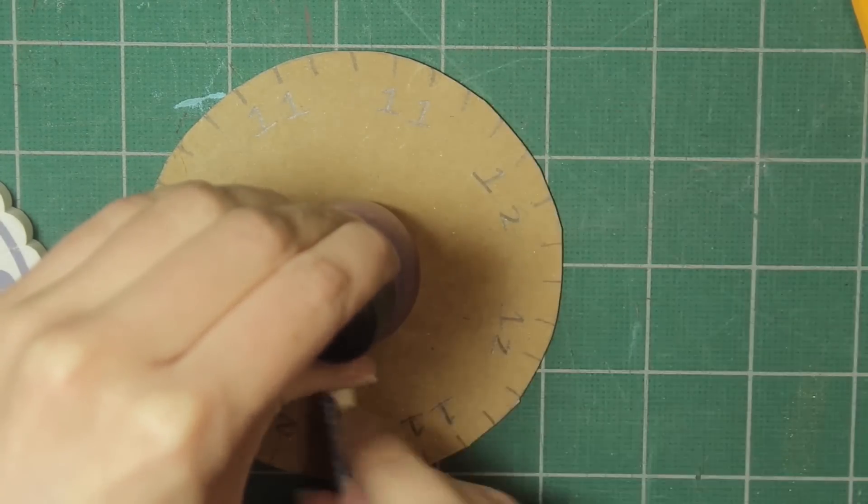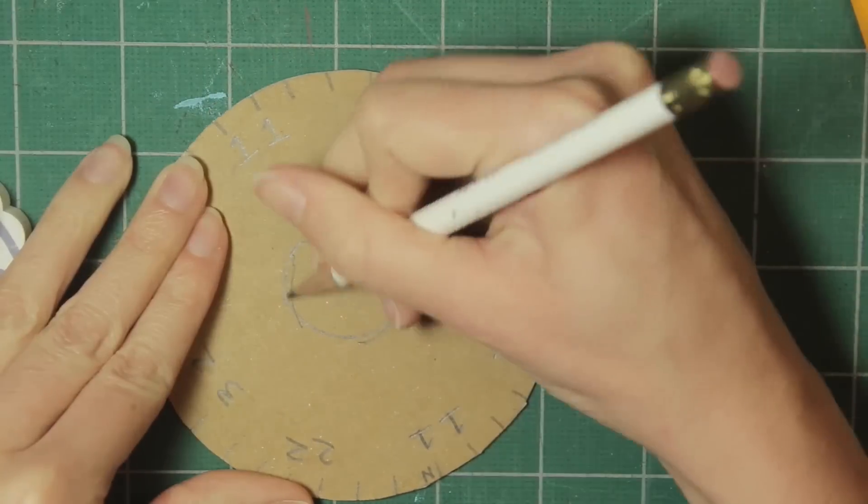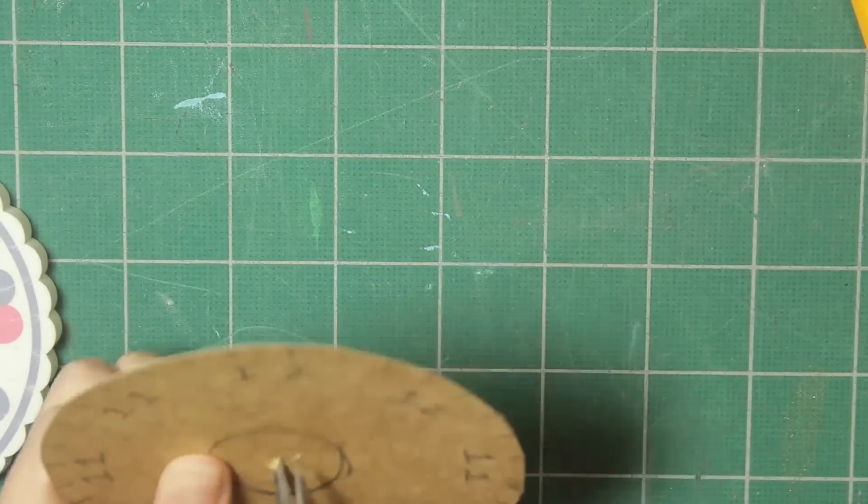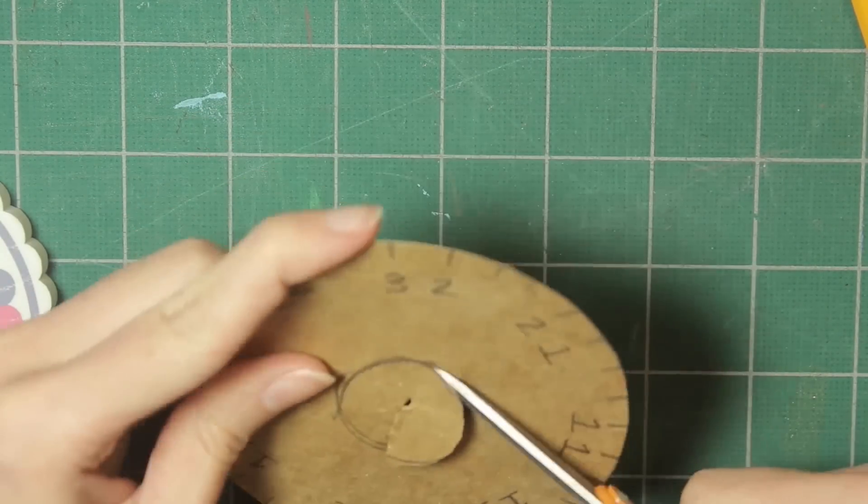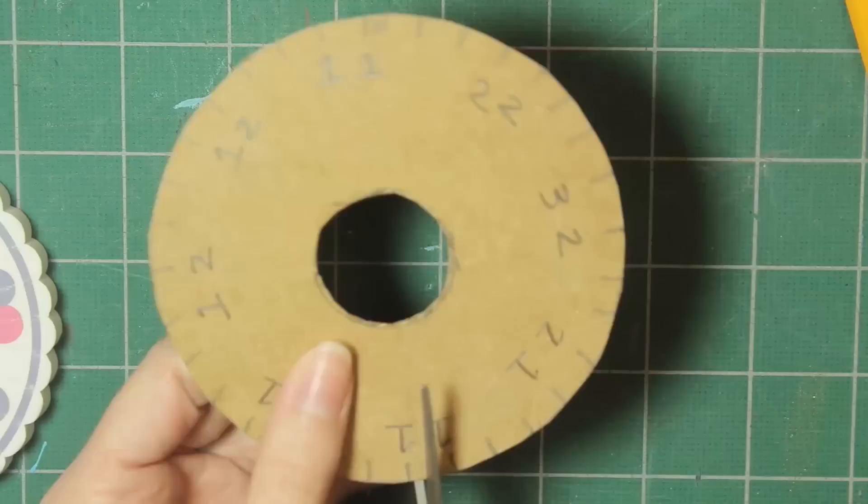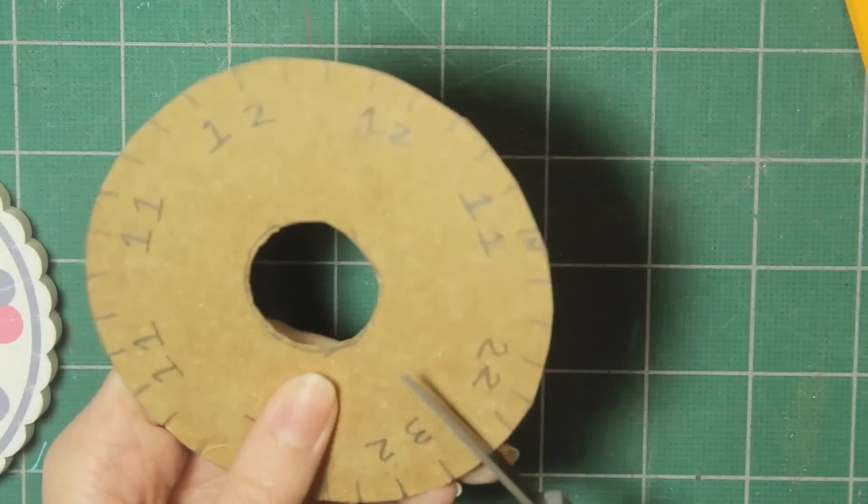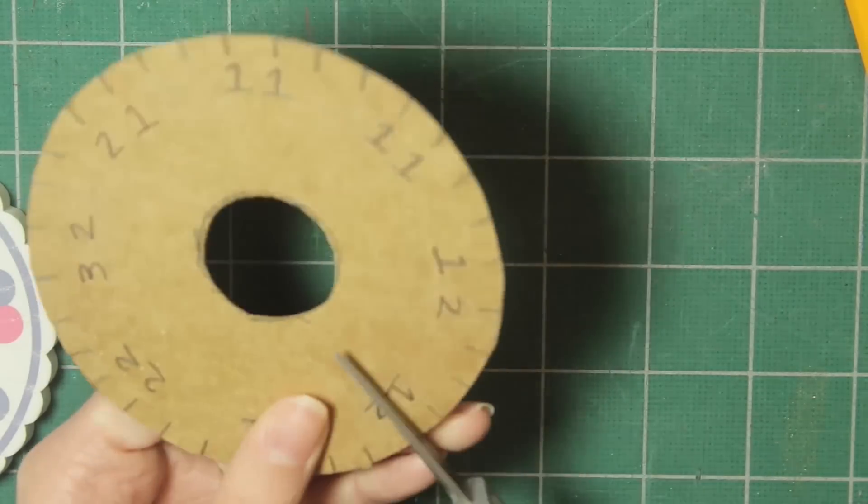So once you've done that, I'm going to just trace a nail polish container to make a circle in the center. You can just draw a circle if you want, it doesn't have to be precise. Then once you've done that, go ahead and cut a notch on each of those marks all the way around the circle.